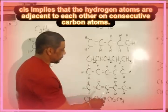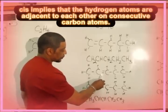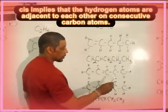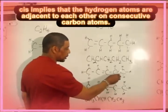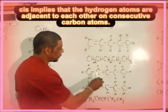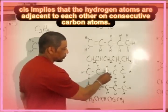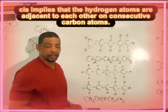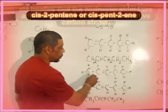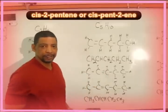An isomer of 1-pentene would be a compound called cis-2-pentene. When naming this compound, the double bond is given the lowest possible position, which is behind carbon 2, not carbon 3. The term cis implies that the hydrogens on carbons 2 and 3 are adjacent to each other, so the proper name for this compound would be cis-2-pentene.